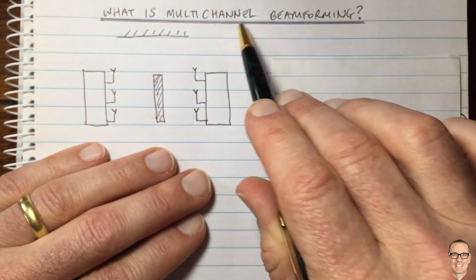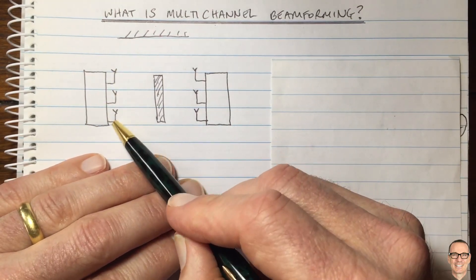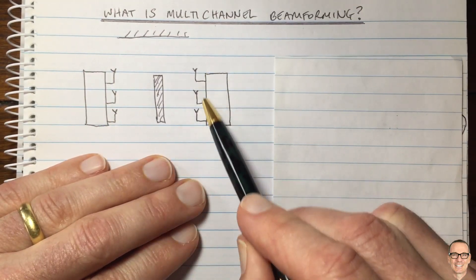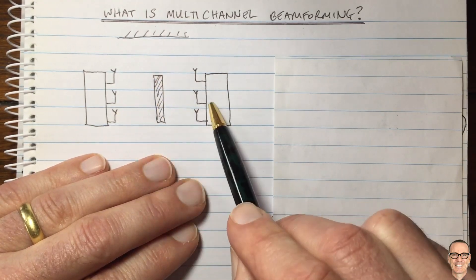So what is multi-channel beamforming? Here we've got a transmitter with multiple antennas and a receiver with multiple antennas, and I've shown a blockage between the two.